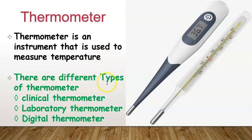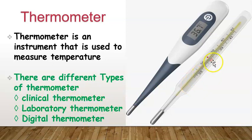There are different types of thermometers: clinical thermometer, laboratory thermometer, and digital thermometer. The clinical thermometer is used by doctors to measure the temperature of the human body, and it uses mercury. The laboratory thermometer is used in labs to measure the temperature of solutions.